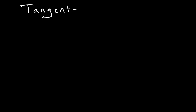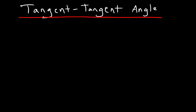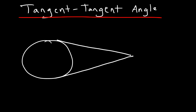Now we're going to go over tangent-tangent angles and talk about a special theorem relating to this type of angle. To draw a tangent-tangent angle with reference to a circle, we need to draw two tangent lines connected to a common endpoint. Let's call this point A, B, C. We have tangent segment AB and another tangent segment CB. A tangent line or tangent segment touches the circle only at one point.